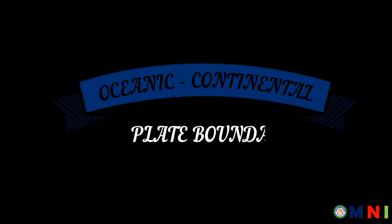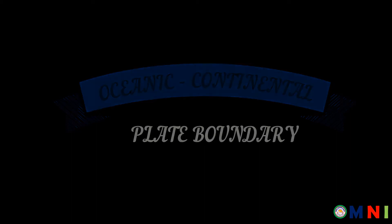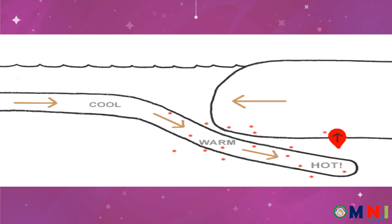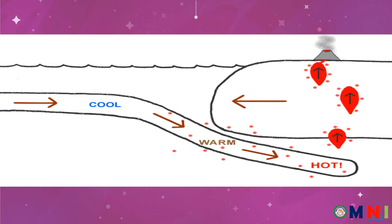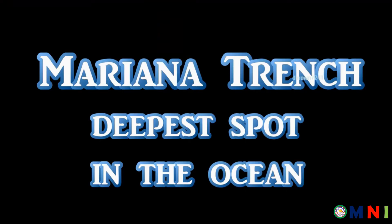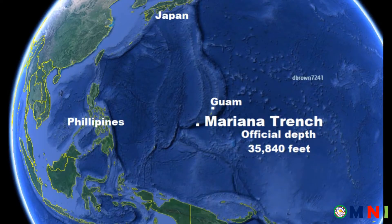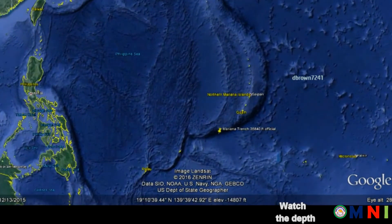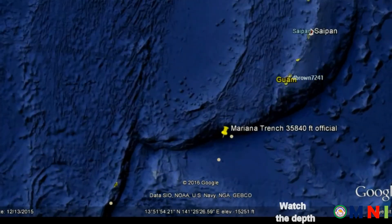Up next is the oceanic-continental convergent plate boundary. When an oceanic plate collides with a continental plate, the thinner and denser oceanic plate slides underneath the thicker and less dense continental plate in a process called subduction. This leads to the formation of volcanic island arcs and trenches. Trenches are also called submarine valleys. The Marianas Trench in the Pacific Ocean is considered the deepest location on Earth.